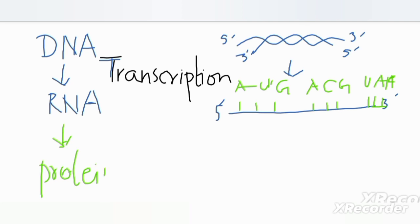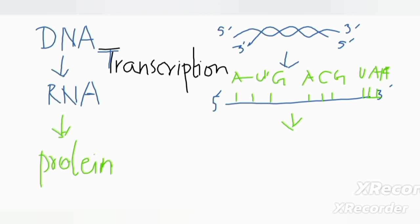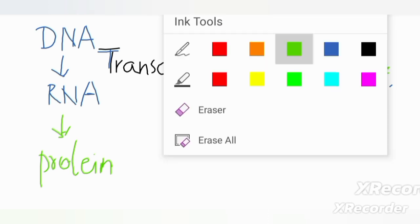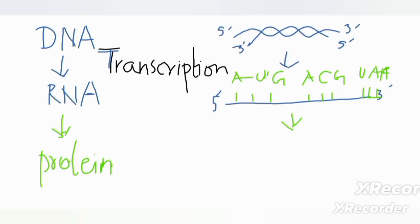Translation is the second step of gene expression that occurs in living cells, in which protein is synthesized using RNA as a template. The information stored in RNA is coded into protein, and protein is composed of an amino acid chain.